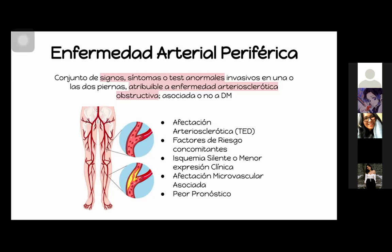Ahora nos vamos a ir a la enfermedad arterial periférica, que se va a definir como un conjunto de signos, síntomas o test anormales invasivos practicados en una o las dos piernas, atribuido a enfermedad aterosclerótica obstructiva, que puede estar o no asociada a diabetes mellitus. Un pacientito diabético va a tener el riesgo multiplicado por tres, más lo que implica el riesgo por su edad. Va a haber una afectación aterosclerótica temprana, extensa y difusa, con factores de riesgo concomitantes, posible isquemia silente o menor expresión clínica, afección microvascular asociada y un peor pronóstico.